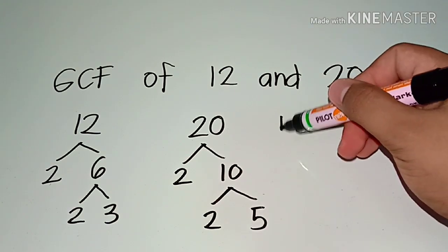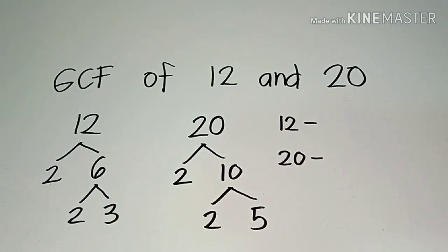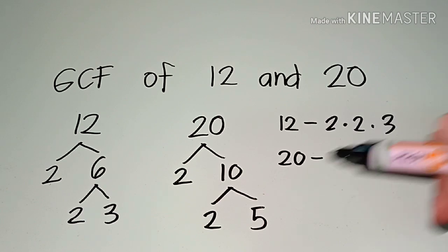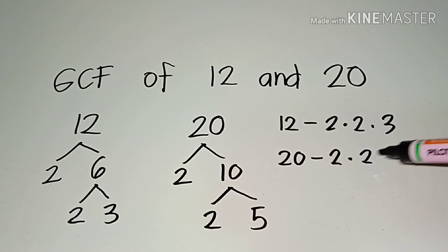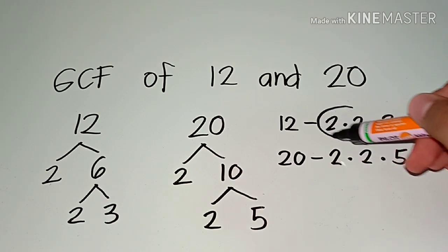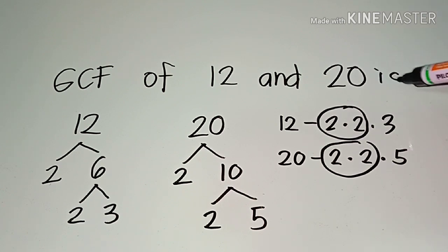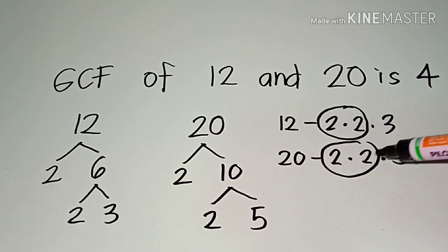Then you have to list down the common factors of 12 and 20. For 12, we have 2 times 2 times 3. And for 20, we have 2 times 2 times 5. If you notice, these are the common factors of 12 and 20. So that means the GCF of 12 and 20 is 4, because 2 times 2 is 4.